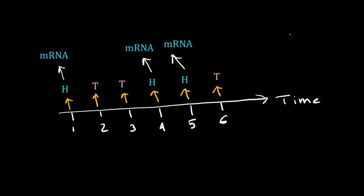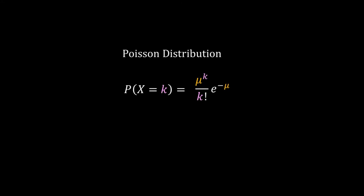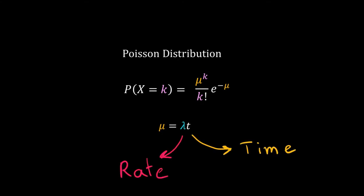Dynamical processes like the transcription of a gene can be mapped to sequential coin tosses. However, in doing so we are discretizing time. But time is continuous, and discretization of time leads to error in our calculations. We have discussed this issue earlier while learning Poisson distribution. The solution is to make the discrete time intervals infinitesimally small. With delta t tending to 0, the binomial distribution of coin toss becomes a Poisson distribution. The probability that k events will happen in an interval t is equal to mu to the power k divided by factorial k, into e to the power minus mu. Here mu is the mean number of events and is equal to lambda, the rate, into time.